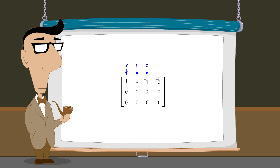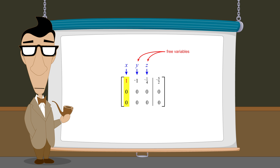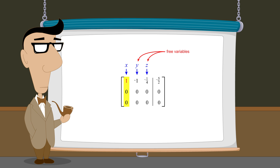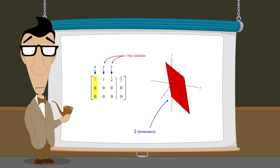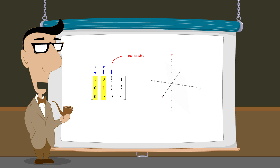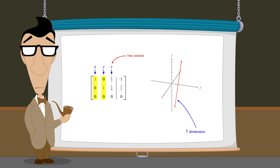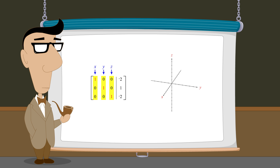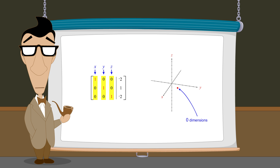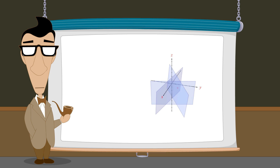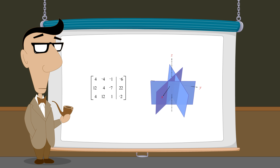So we have seen that in a reduced row echelon matrix, the pivot columns divide the system variables into dependent variables and free variables. The number of free variables corresponds to the number of dimensions required to graphically represent the solution set. If there are two free variables, the infinite solution set will be graphically represented by a two-dimensional plane. If there is one free variable, the infinite solution set will be represented by a one-dimensional line. And if all columns left of the vertical line are pivot columns, there are no free variables and the solution set will be a zero-dimensional point, corresponding to a single unique solution. In the next lecture, we will use Gauss-Jordan elimination to transform systems of equations with no solutions and follow how their graphical representation changes during each step of the process.